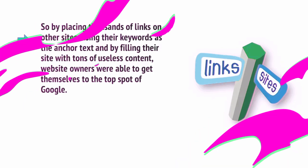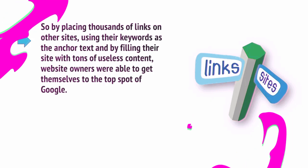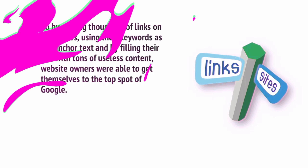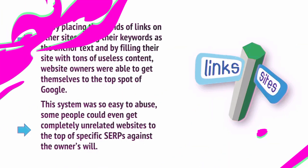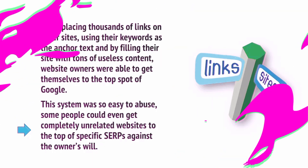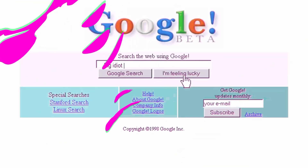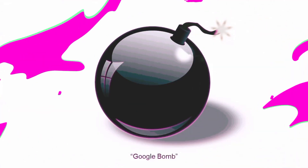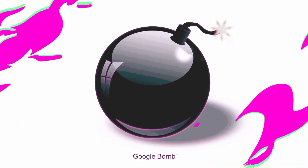By placing thousands of links on other sites, using their keywords as the anchor text, and by filling their sites with tons of useless content, website owners were able to get themselves to the top spot of Google. This system was so easy to abuse that some people could even get completely unrelated websites to the top of specific SERPs against the owner's will — you could make it so that searching for 'Big Idiot' would bring up a picture of your friend, for example. This was called a Google bomb. Obviously, this started to make a mess of Google's results, and so Google had to adapt and get smarter.